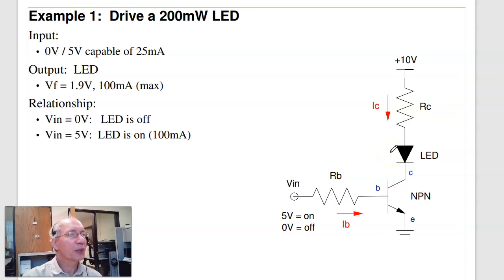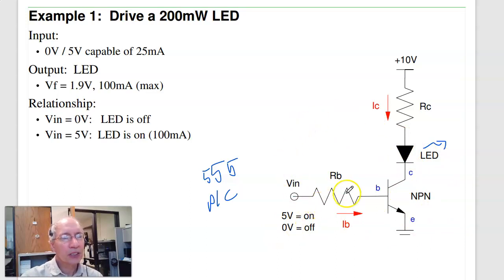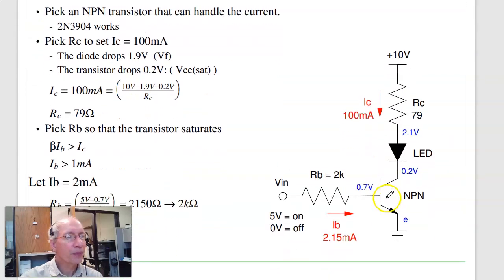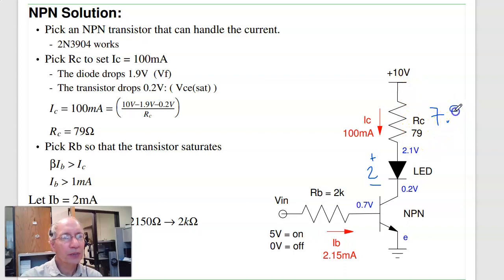Suppose I want to drive a 200 milliwatt LED. The input is 0 or 5 volts, capable of 25 milliamps — this could be a 555 timer or a PIC processor. The LED has a 1.9 volt drop and 100 milliamp current capability. The procedure: first find RC to set the current, then find RB to turn on the transistor. For step one: IC is 100 mA, the diode drops about 2 V, the transistor when saturated drops 0.2 V — so 2.1 V total, leaving 7.9 V across the resistor. 7.9 V at 100 mA gives RC = 79 ohms.